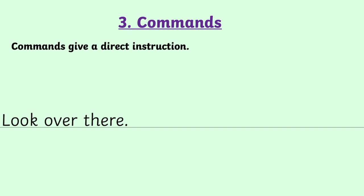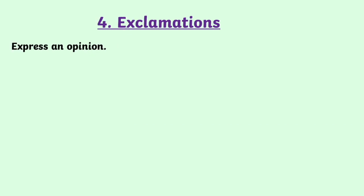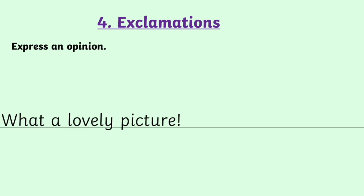The last sentence type is exclamations. Exclamations express an opinion — they tell you what somebody thinks. There's something quite special about them. For what we need to know in year two, exclamations begin with the word 'what' or the word 'how'. They also express an opinion, and you'll notice they end with an exclamation mark. But the exclamation mark can't be the only clue we rely on — we have to check that it begins with 'what' or 'how' and is expressing someone's opinion or idea.